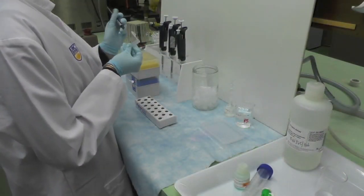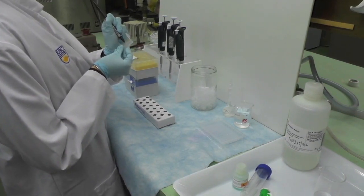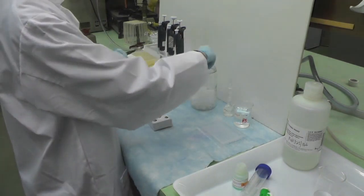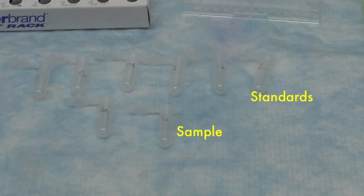Label the microfuge tubes before you start. You will need to dilute your samples to at least two different concentrations to ensure one of them will fall within the standard curve.